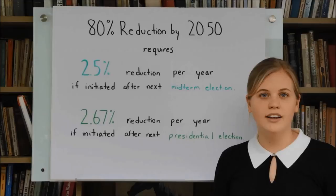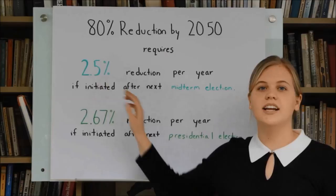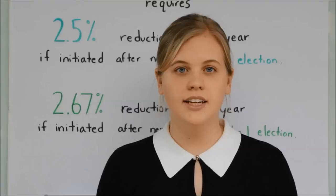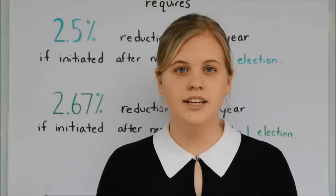But it is still practical to achieve that. A linear 2.5% reduction per year would yield an 80% reduction in 32 years. This can happen, but only if the public, including young people, understand what is needed and begin to influence our government. We'll talk about that in our next video.